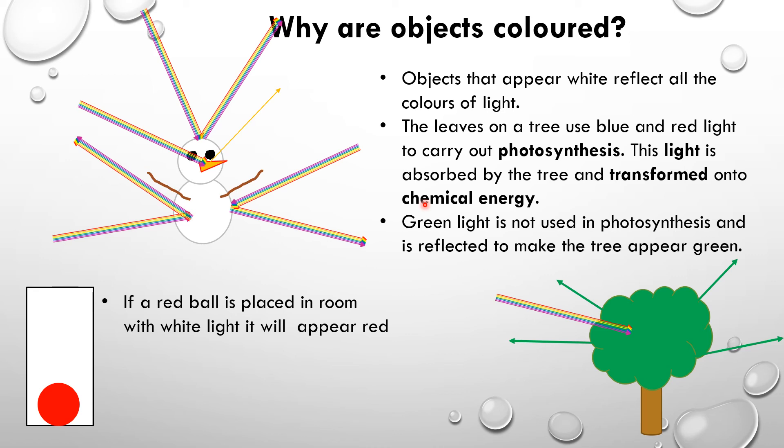So that kind of makes sense. If we put a red object in a room with white light, it will appear red. What if we put a red object in a room that only has blue light?